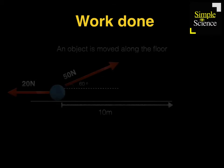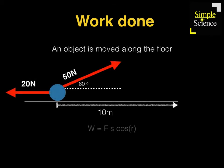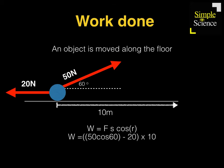In the next example, we have an additional force of 20 Newtons to the left. We use the same equation — it's the resultant force multiplied by the distance moved in the direction of the resultant force. Since the object is moved along the floor, the resultant force is to the right. So the resultant force is 50 cos 60 minus 20, multiplied by the distance moved in the direction of the resultant force, which is 10 meters. That gives you 50 joules.